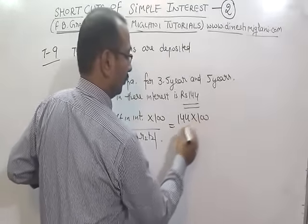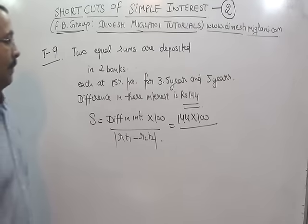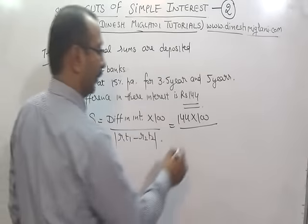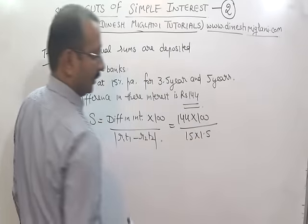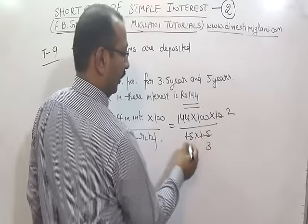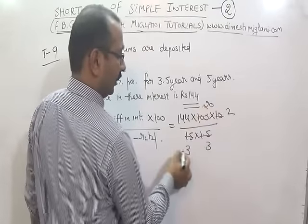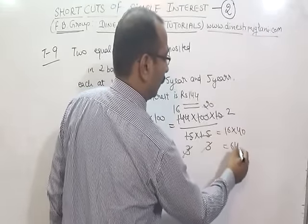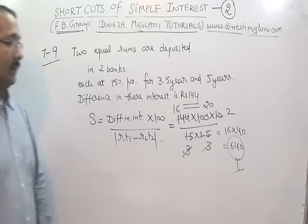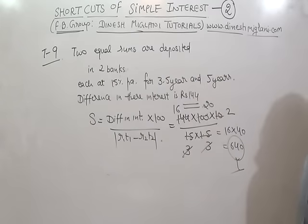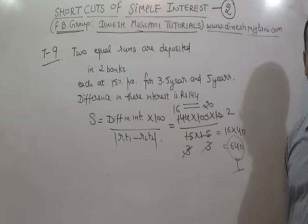Applying the formula: Sum = 144 × 100 / (15 × |5 − 3.5|) = 144 × 100 / (15 × 1.5) = 14,400 / 22.5. Simplifying: 5 goes into various terms and 3 × 3 = 9, giving 640. So the sum deposited in each bank is rupees 640. That is the answer for trick number nine.